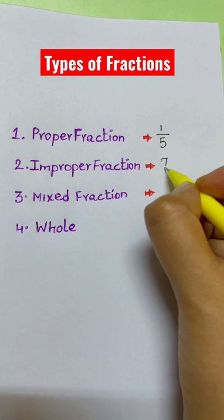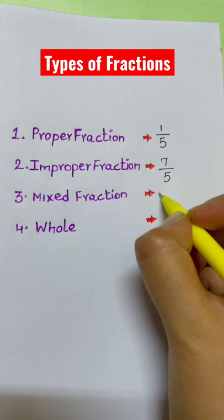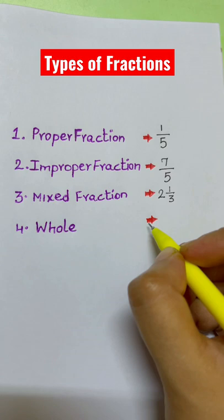A mixed fraction is a combination of a whole number and a proper fraction. One whole is a fraction whose numerator and denominator are the same, which equals one whole.